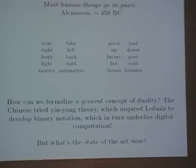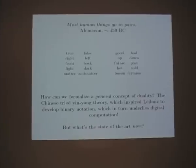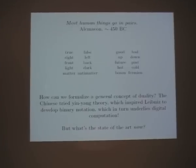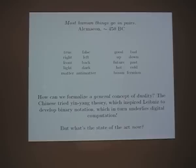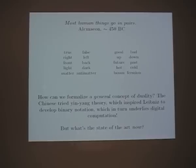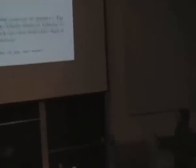It's been known for a long time that most things come in pairs. This is a quote by Alcmaeon, a Greek thinker around 450 BC. Some of these famous pairs include true/false, good/bad, right and left, up and down. We have some more recent ones: matter and antimatter — discovered mathematically, then it turned out people had been looking at it and hadn't seen it — and bosons and fermions.